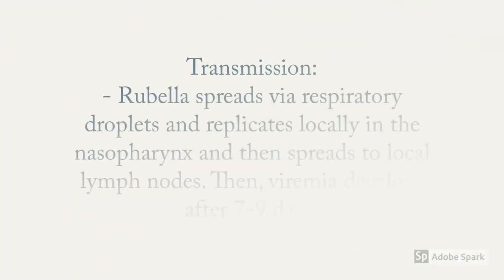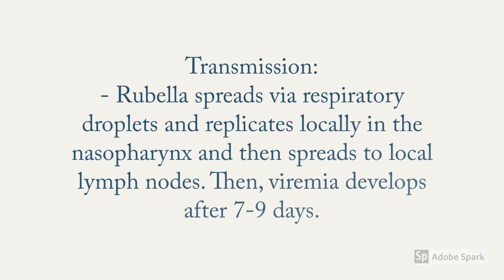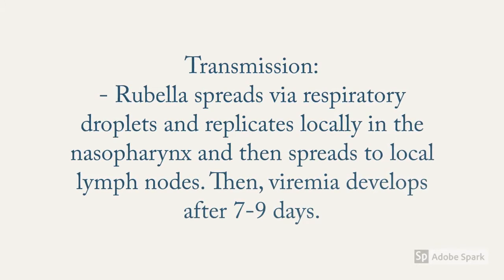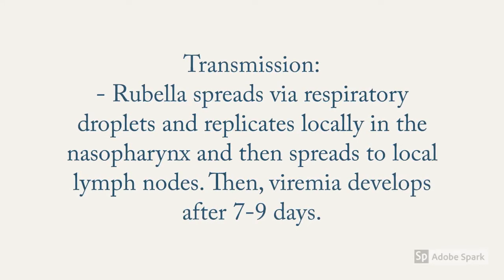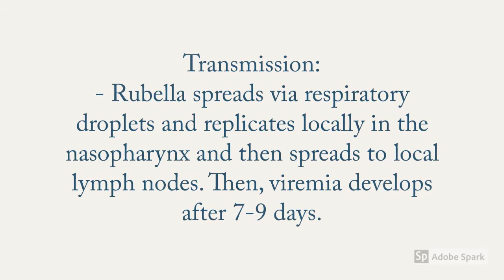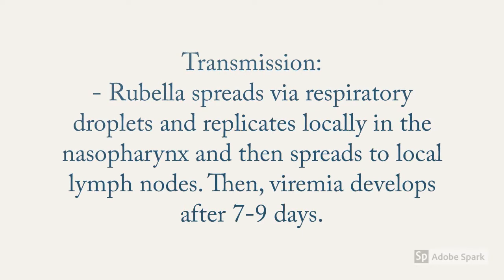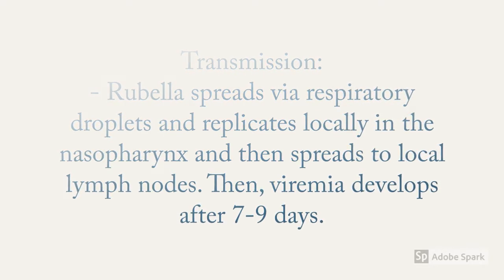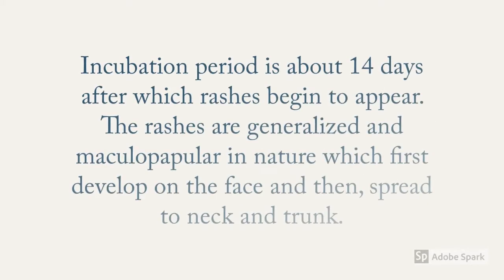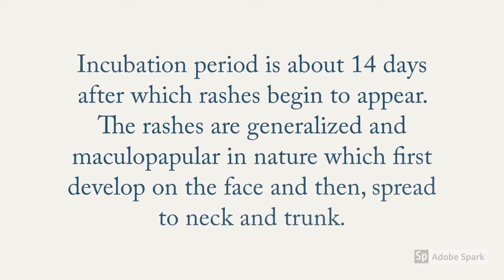The mode of transmission for rubella virus is either via droplet infection or transplacentally, causing congenital rubella syndrome. The virus can also be shared through blood, feces, or urine. Rubella spreads via respiratory droplets and replicates locally in the nasopharynx, then spreads to local lymph nodes, after which viremia develops within seven to nine days. The incubation period is about 14 days, after which rashes begin to appear.